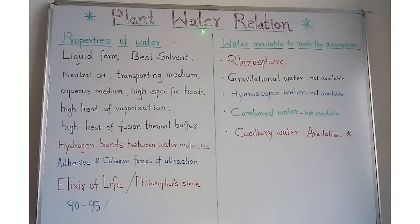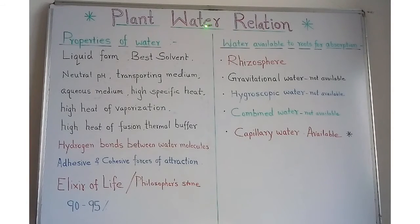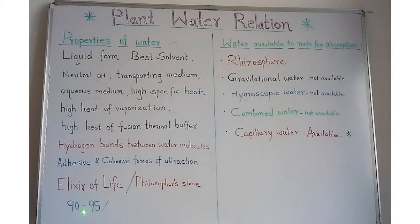As we know, 71% of Earth is covered in water and hence Earth is called the blue planet. 60% of the human body is made up of water. Water is used by all terrestrial animals to drink in order to provide essential minerals for the body's nourishment. Water constitutes about 90 to 95% of plant cells and tissues.